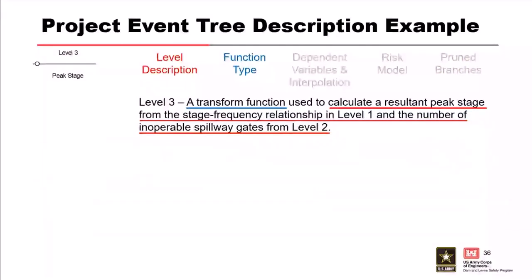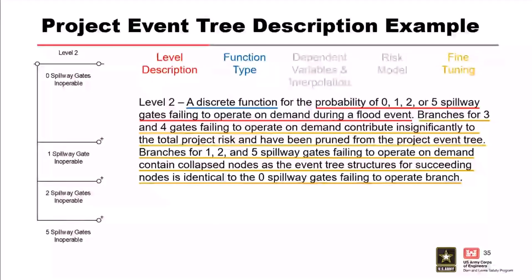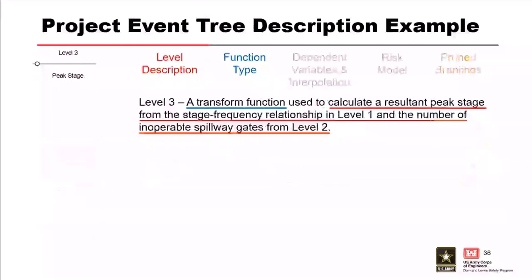Level three is a transform function used to calculate a resultant peak stage from the stage frequency relationship in level one and gate inoperability in level two. This is important because gate inoperability affects spillway outflow—the same inflow event that leads to a peak stage with zero gates inoperable will lead to a different peak stage with one, two, or five gates inoperable. Therefore, we need a transform function in level three to calculate the resultant peak stage based on the number of inoperable spillway gates.